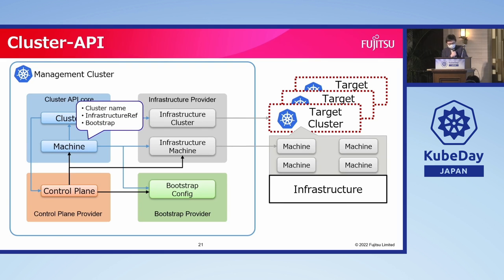The Machine object contains references to the infrastructure machine object and bootstrap config object, and also knows the name of the cluster it belongs to. To create a Kubernetes control plane, we mainly need three objects: the Cluster, the infrastructure cluster, and the control plane object. After those three objects are ready, the control plane provider starts to create the infrastructure machine object and bootstrap config object, and then creates a Machine object referencing the previous two objects. After that, the machine controller sets an owner reference to the infrastructure machine and bootstrap config objects to notify each provider that these objects are consumed by a machine.